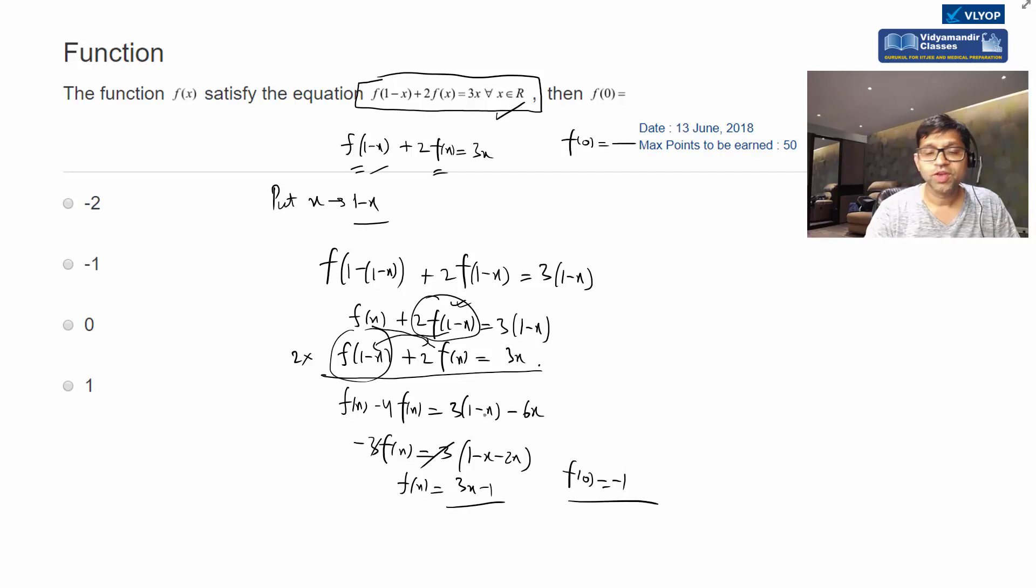So here we have the main trick: that we replace x by (1-x), or x by 1/x, or x by x+1. So these things we replace in the functional equation, so that we have two equations. By solving two equations, we can find f(x). So this is the answer.